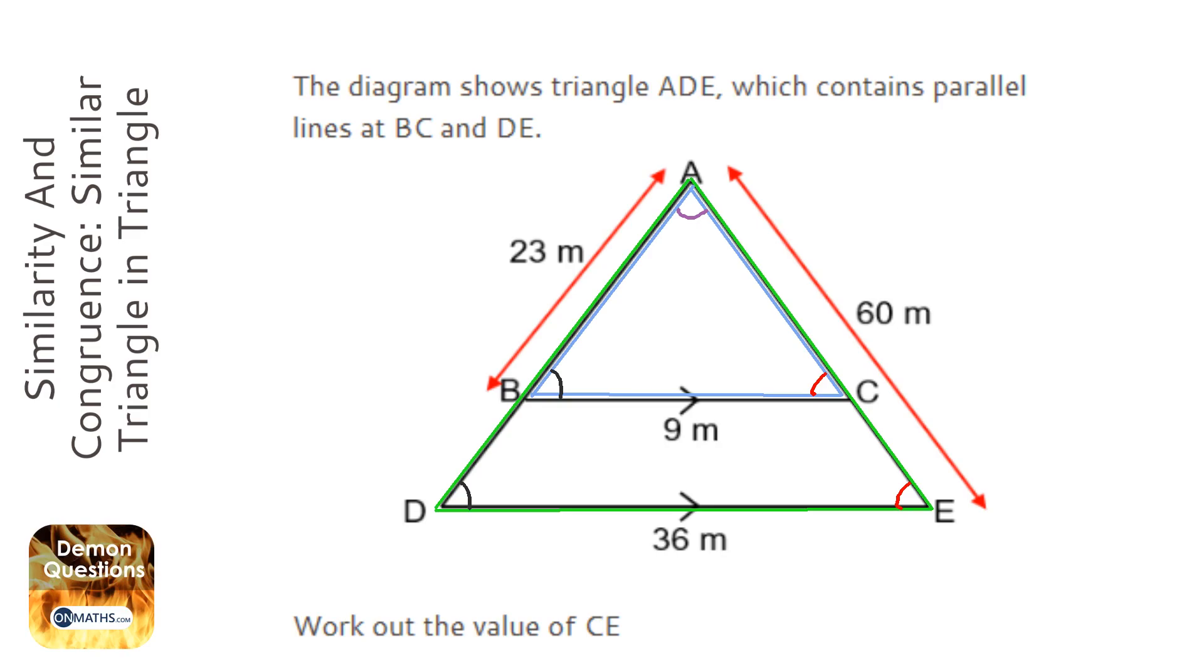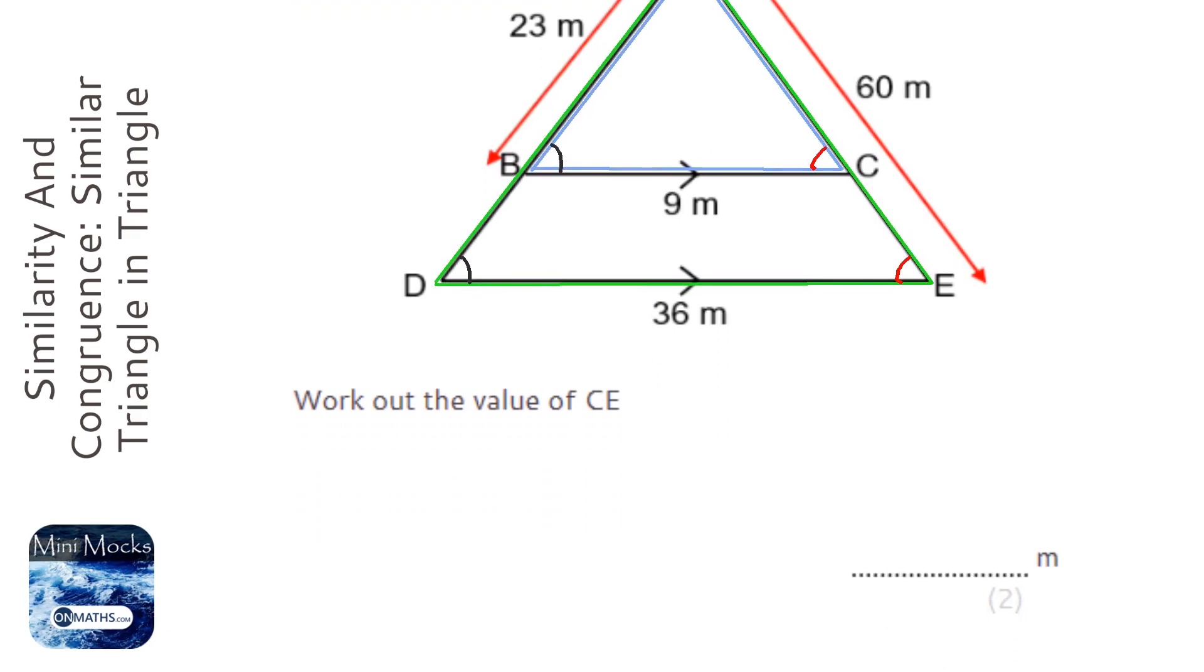Mathematically similar means all the angles are the same, but we've just multiplied all the lengths by something to get to the new triangle. So, an important first step of this is to draw out the two triangles. I'm just going to sketch them out roughly. So a small one and the big one.